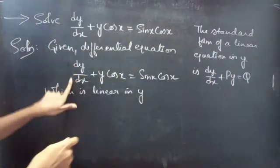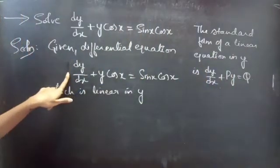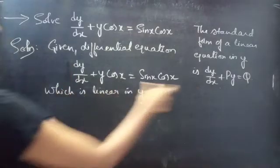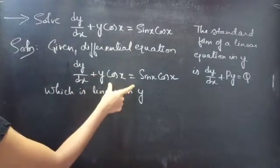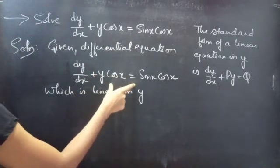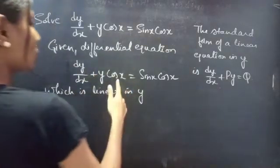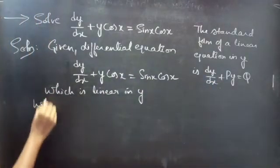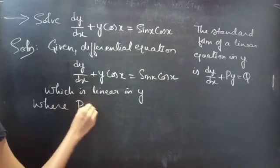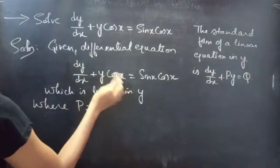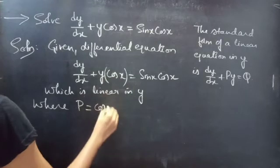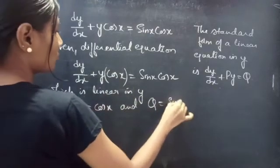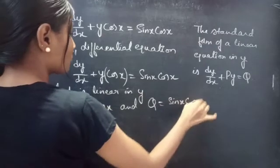Here the coefficient of dy/dx is 1, so by comparing these two equations we can say that the given equation is in linear form. Also we will get P and Q simply by comparing: where P equals cos x and Q equals sin x·cos x.